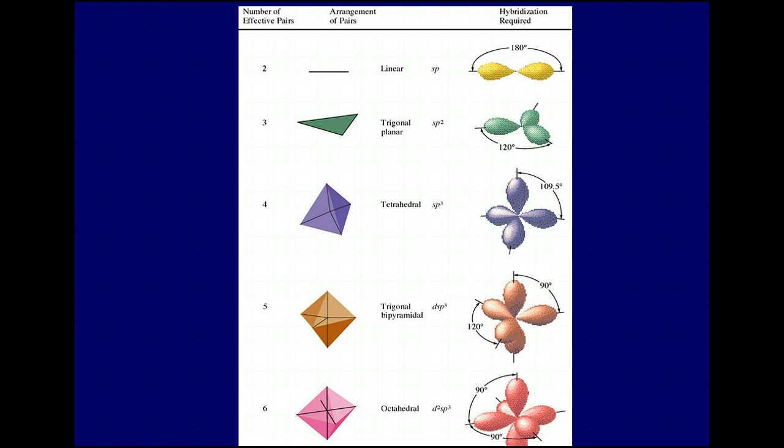This summarizes the pairs of electrons. Remember, multiple bonds only count as one pair. And the types of hybridization you will see involve the s, p, and d orbitals combined in various ways to give you the various geometries we've talked about.